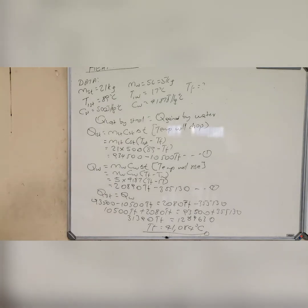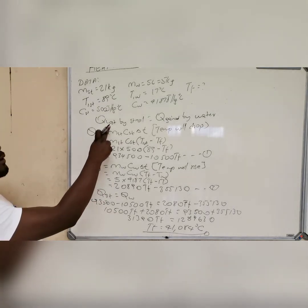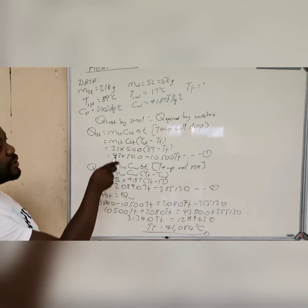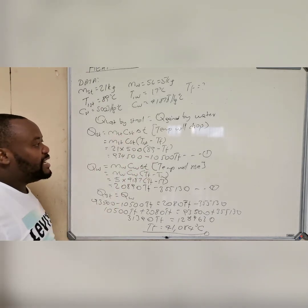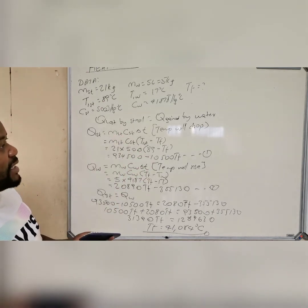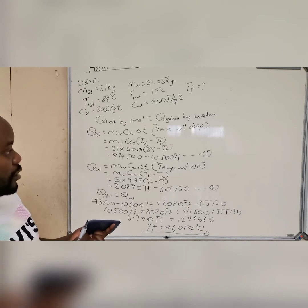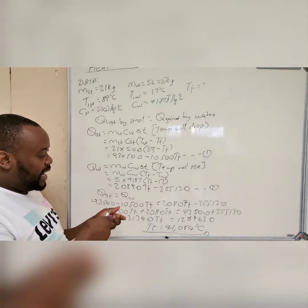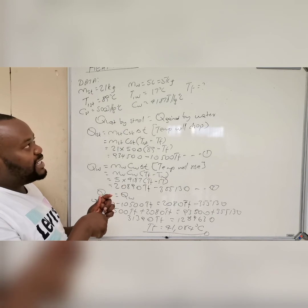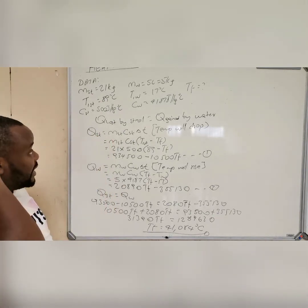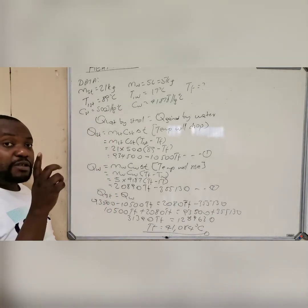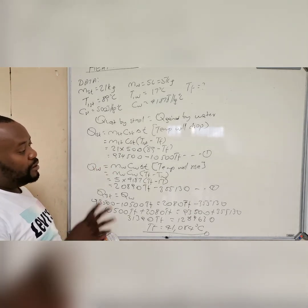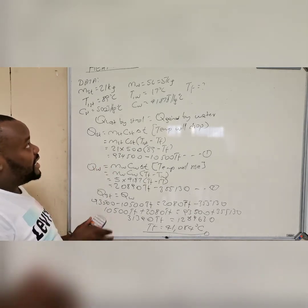So this is how you find the final temperature for heat transfer. The heat lost by the steel equals the heat gained by the water. This is an example where you use the specific heat capacity of two materials — one material gains energy from the other. The next example will include latent heat.